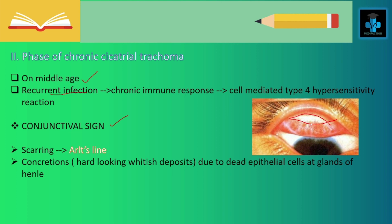Also, concretions will be present. These concretions are hard-looking whitish deposits, which are due to dead epithelial cells at the glands of Henle.